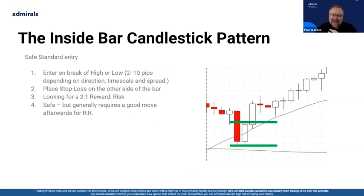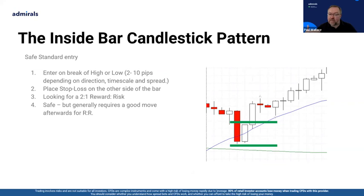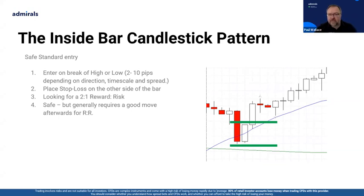For entry, what we call the safe standard entry is to enter on the break of the high or the low of that candle — somewhere between 2 to 10 pips depending upon the direction, timeframe, and spread. If you're trading a weekly inside bar, you might use 10 pips; if you're trading a five-minute breakout, maybe just two pips. In terms of stop loss, you never trade without one — place it the other side of the candle. But also look at what the chart is telling you. As the old trader saying goes: don't be a dick for a tick.